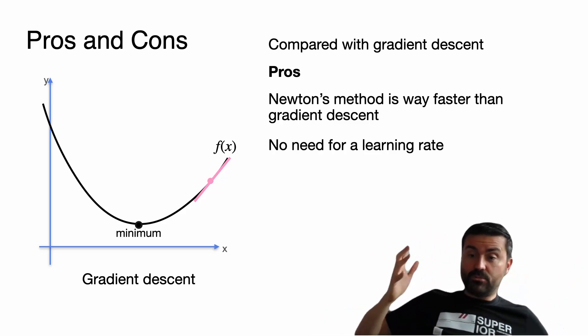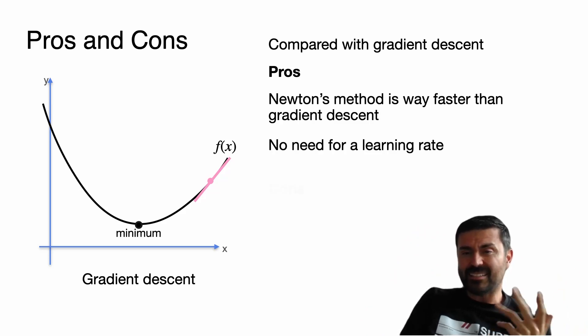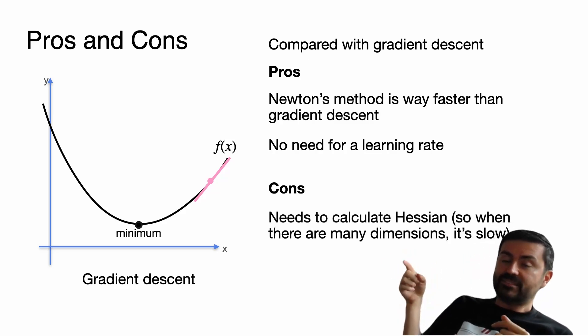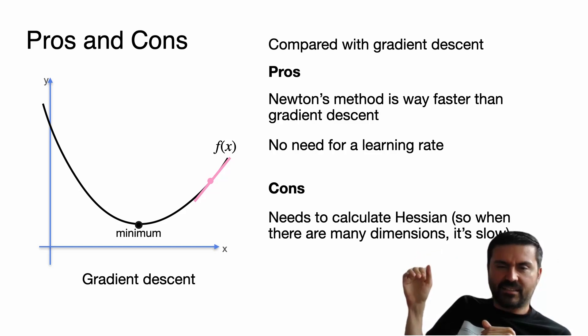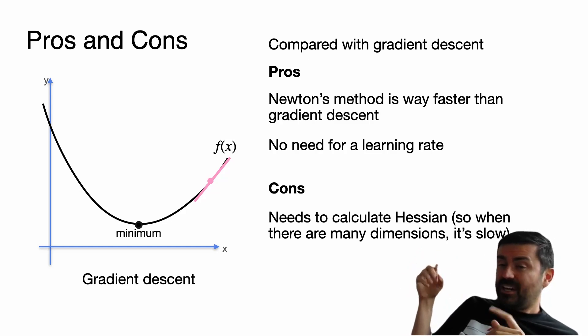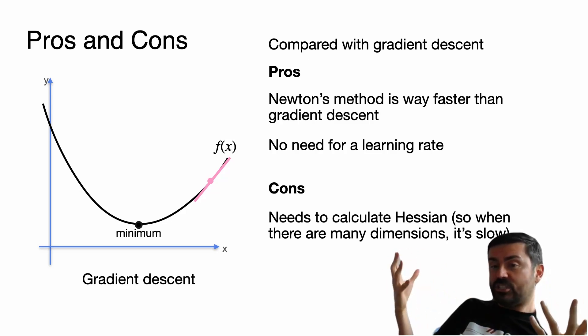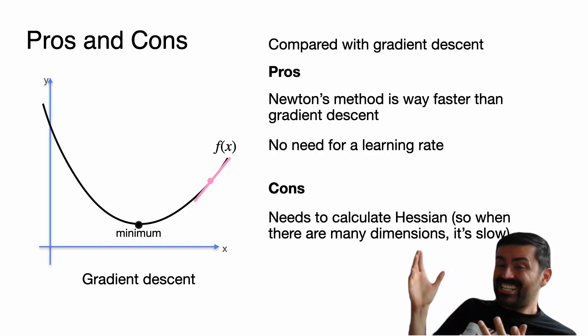Now you may be wondering why don't we use it all the time? Why do we still use gradient descent? Because Newton's method has some cons. So it turns out, as you noticed, that when we calculate one point based on the previous one we have to do a little operation there with f' and f and dividing. Well that's easy in two dimensions, but if you have three dimensions you need to invert a small matrix. And if you have more dimensions you need to invert a bigger and bigger matrix. That's a matrix of second derivatives. It's called the Hessian.